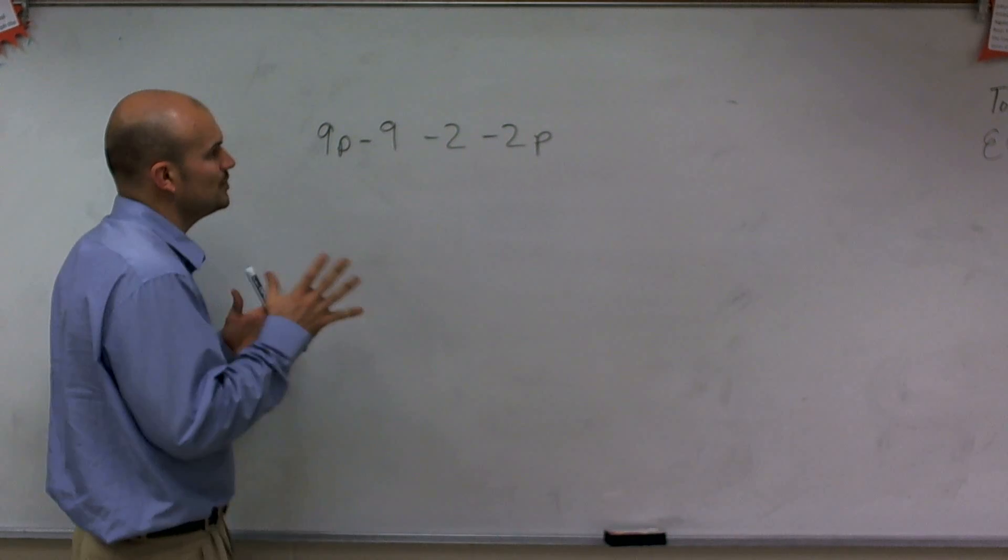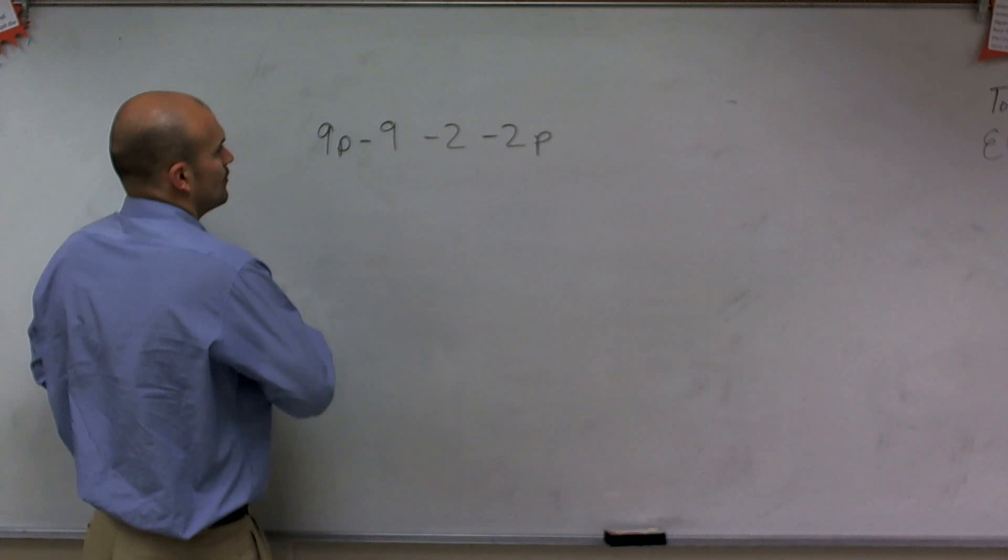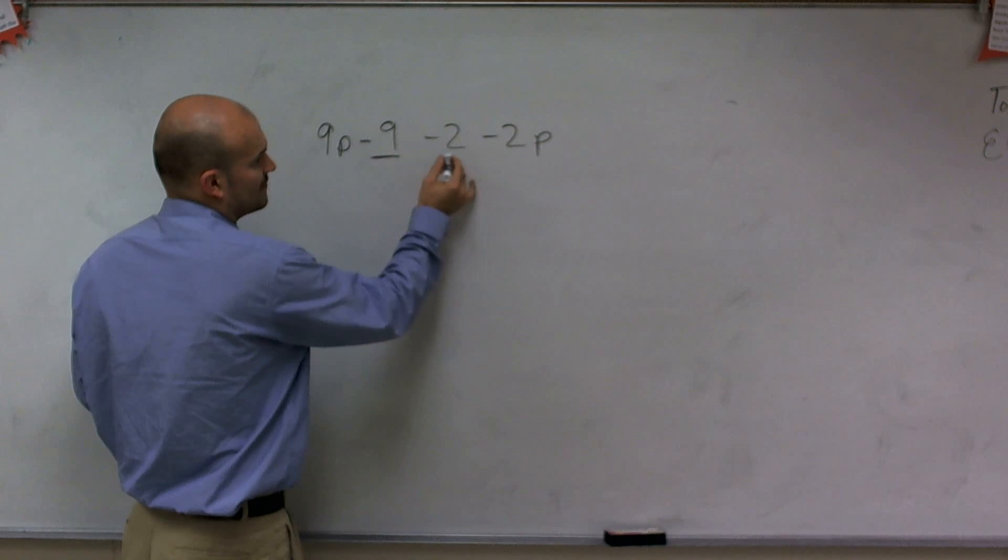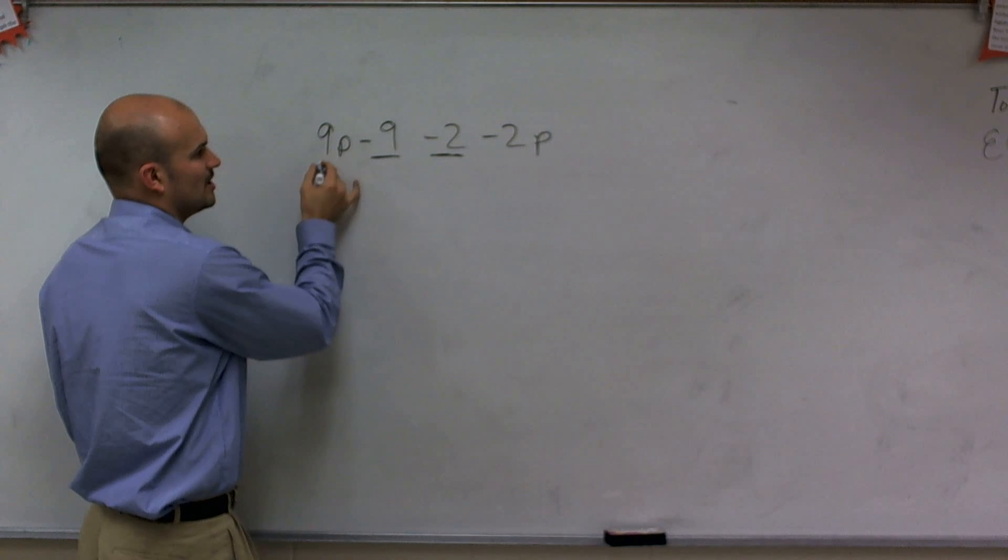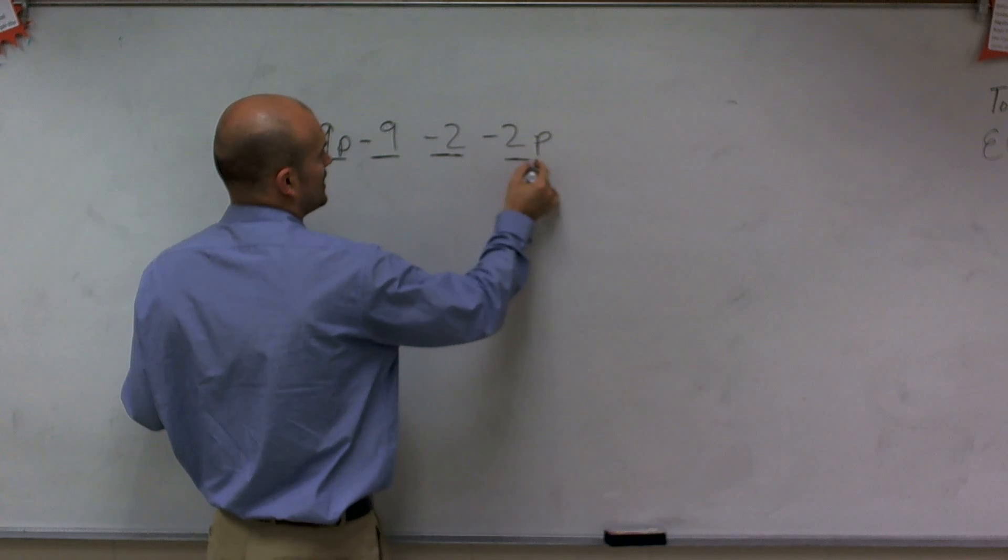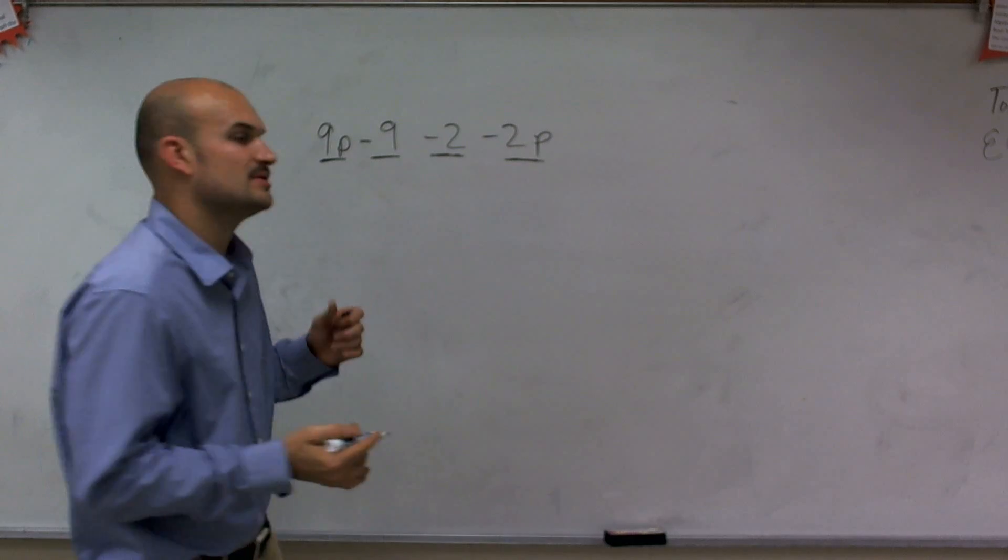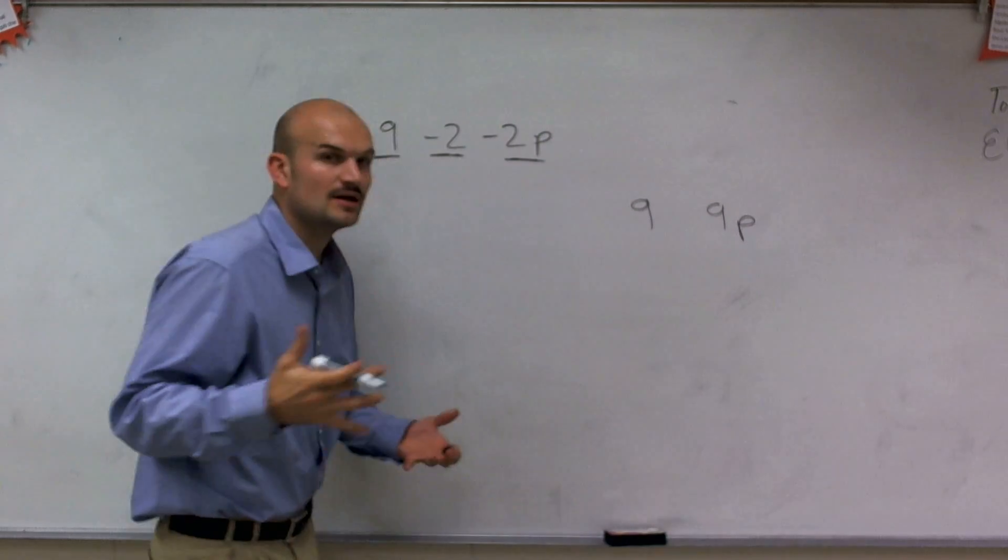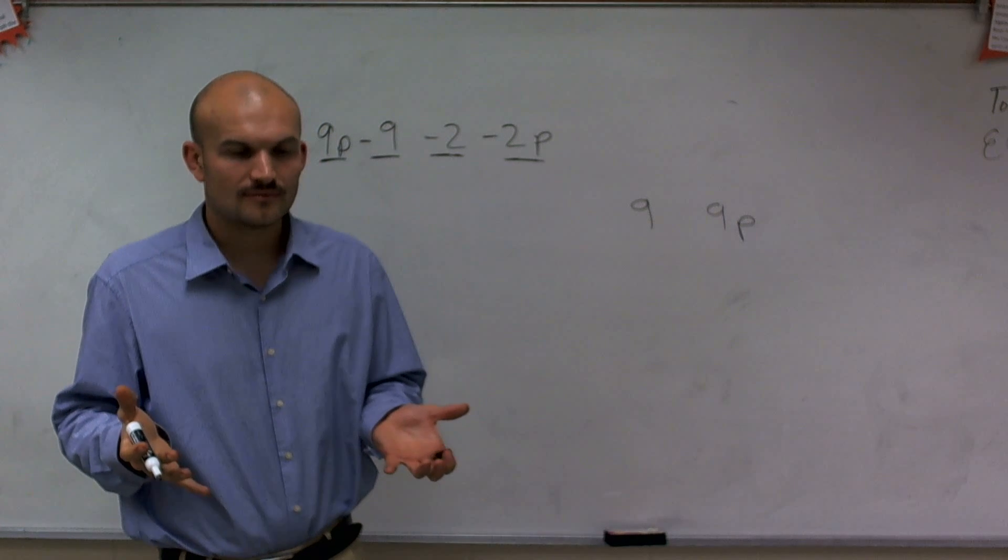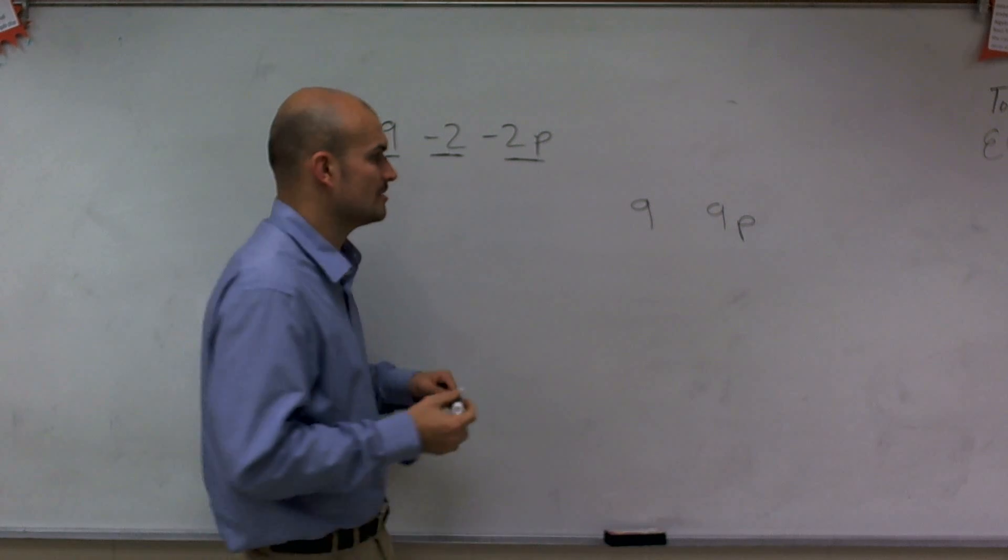Let's look at two different types of terms that we have. We have numbers, which would be negative 9 and negative 2. And then we have numbers multiplied by variables, which would be 9p and negative 2p. Let's look at the difference between the factors of 9 and 9p, and that will give us an understanding of why we can't combine these two terms.